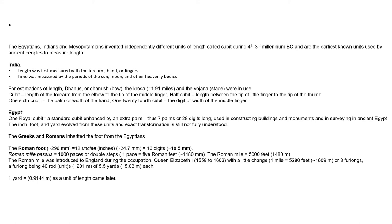In Egypt, the royal cubit was a standard cubit enhanced by an extra palm, and was used for measuring to construct buildings and monuments. Other units — namely foot, inch, and yard — originated from this, though the real source is still not fully known. The Greeks and Romans inherited the foot from Egyptians, as they also inherited the science of writing and architecture from Egypt.